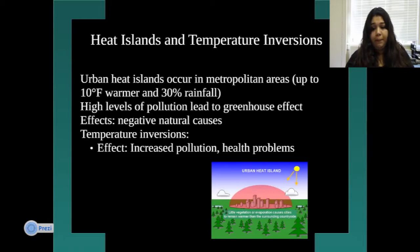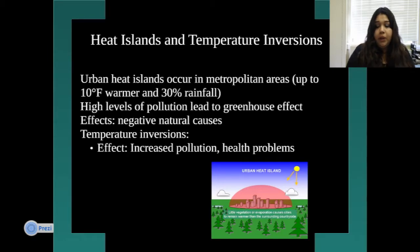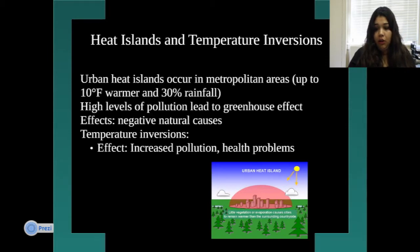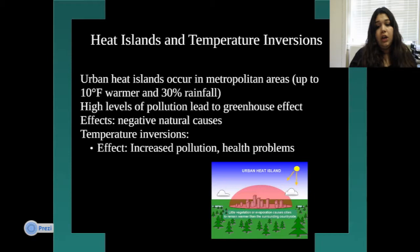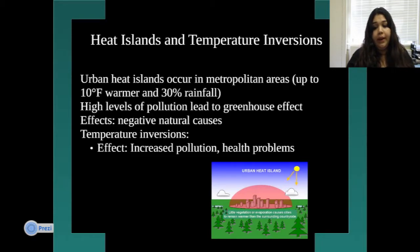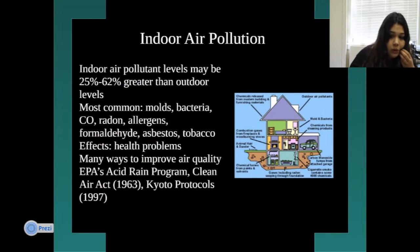There are also heat islands and temperature inversions. Urban heat islands occur in metropolitan areas — highly populated cities like New York — and can be up to 10 degrees Fahrenheit warmer with 30% more rainfall. These high pollution levels contribute to the greenhouse effect and cause temperature inversions, which increase pollution and health problems.